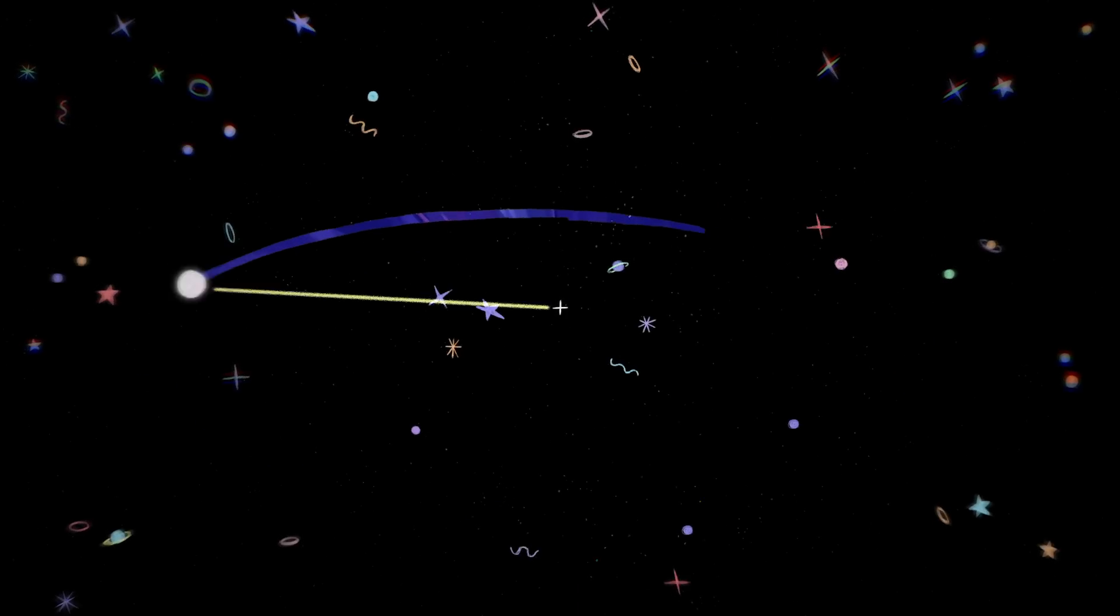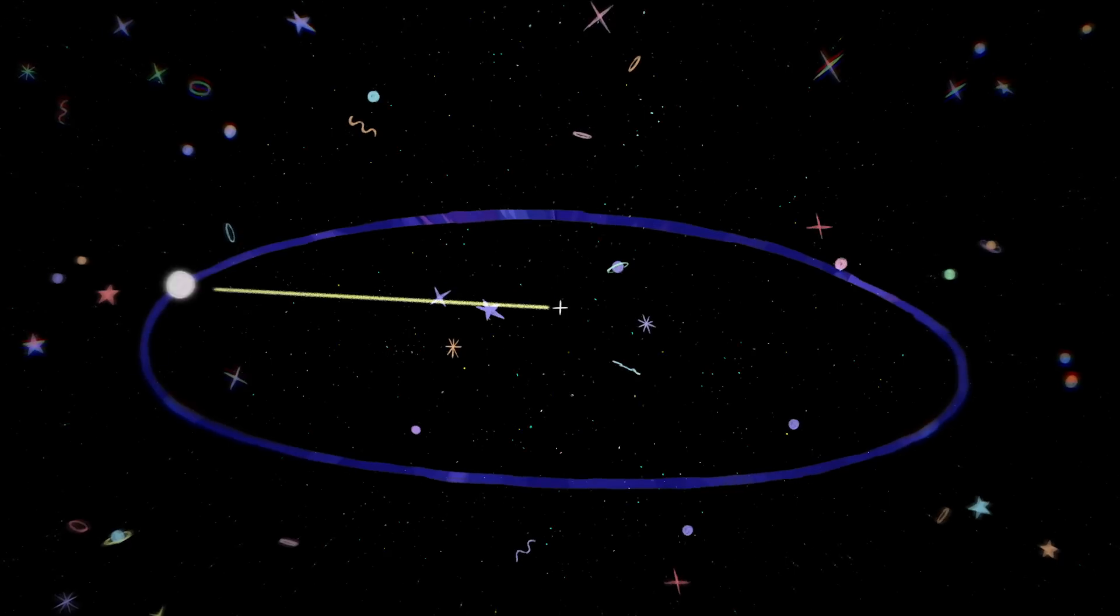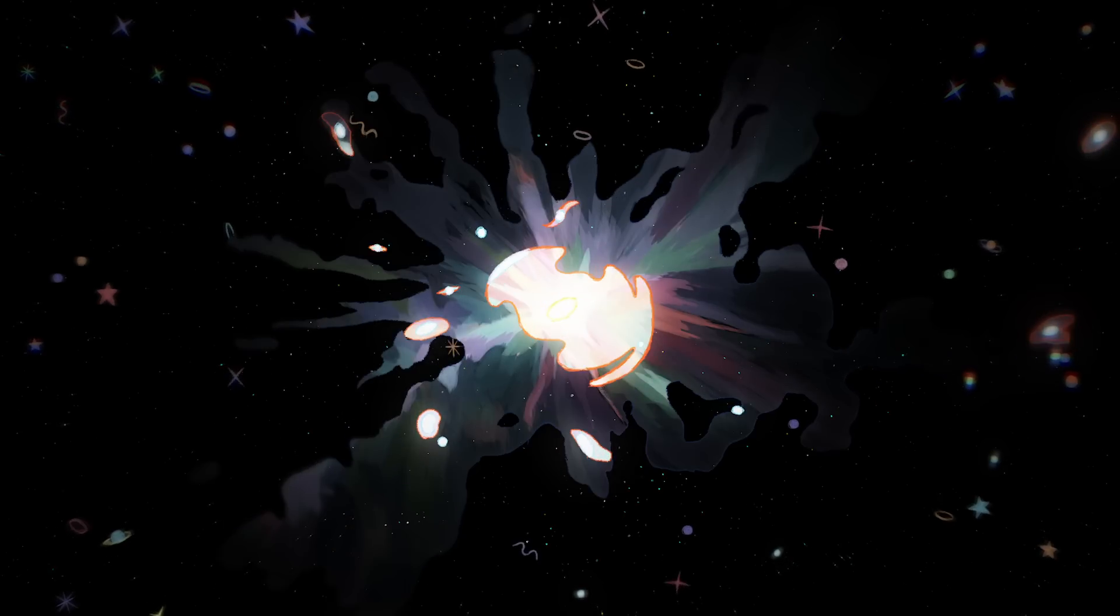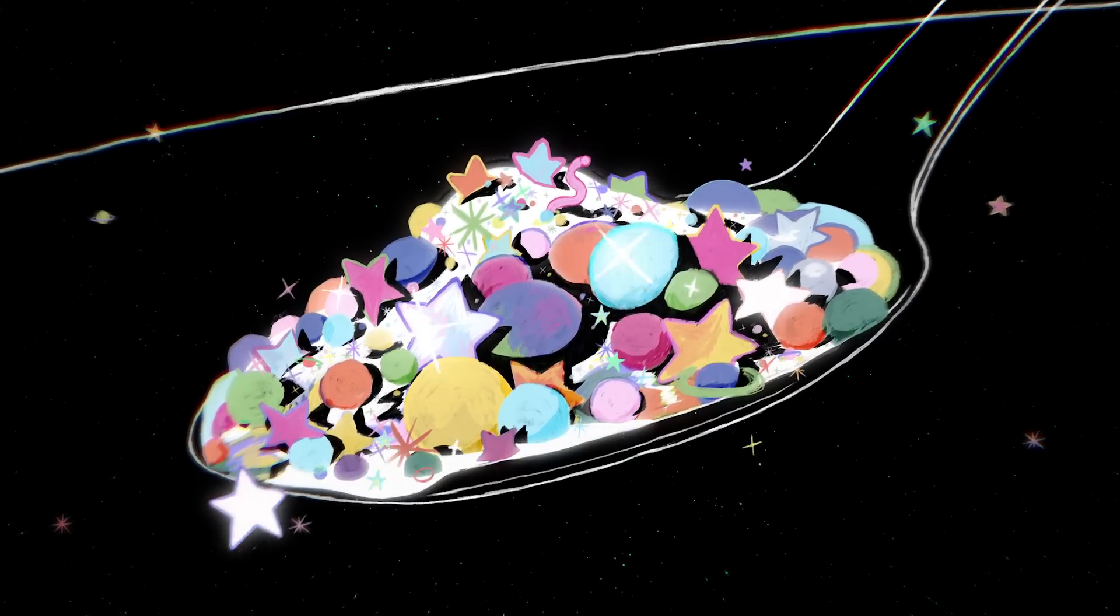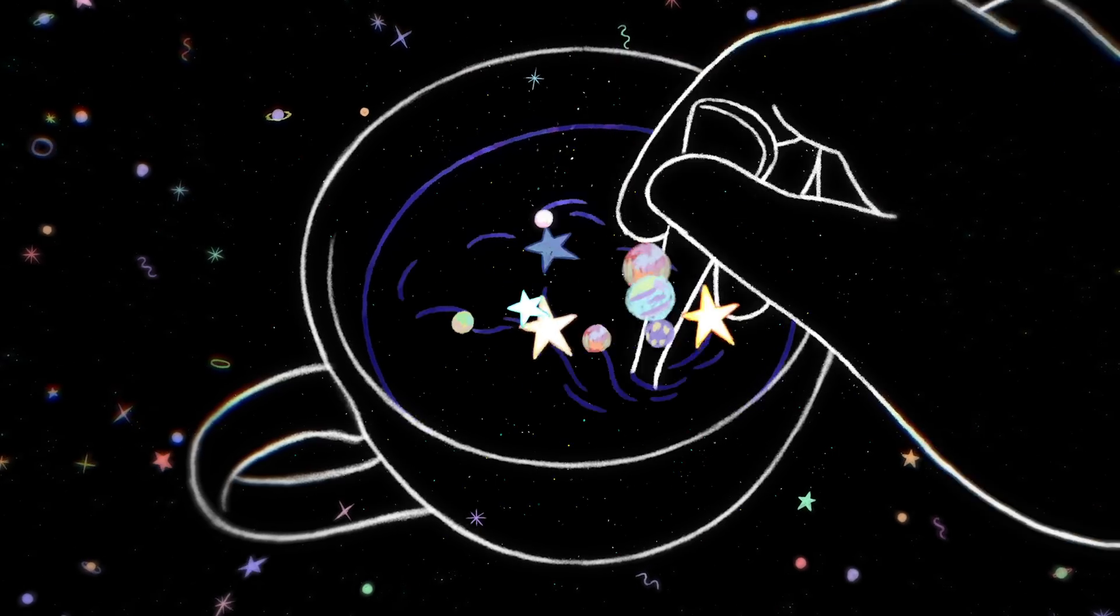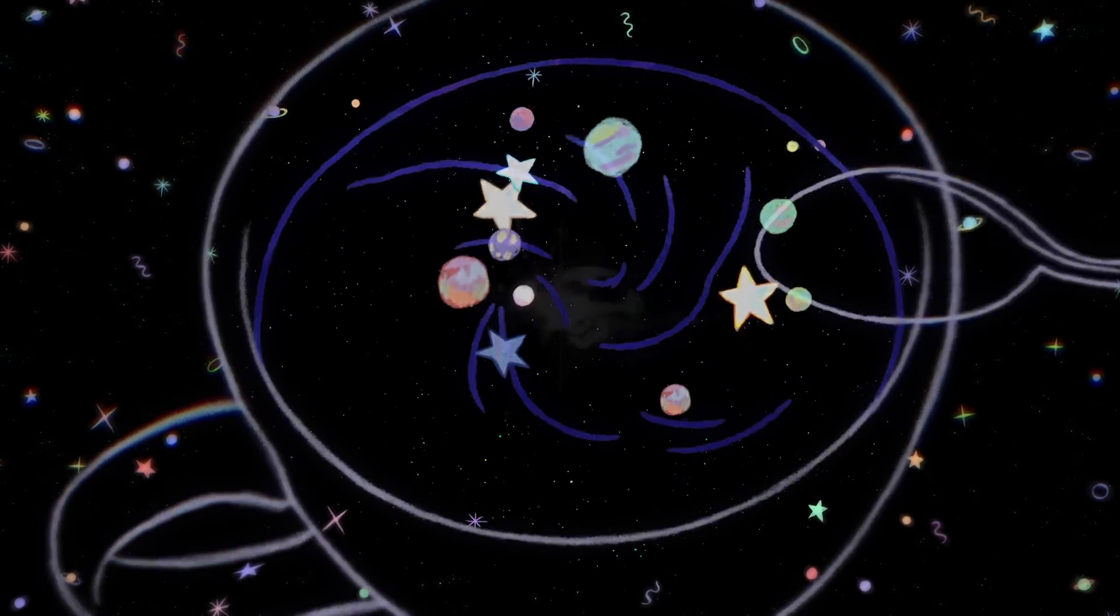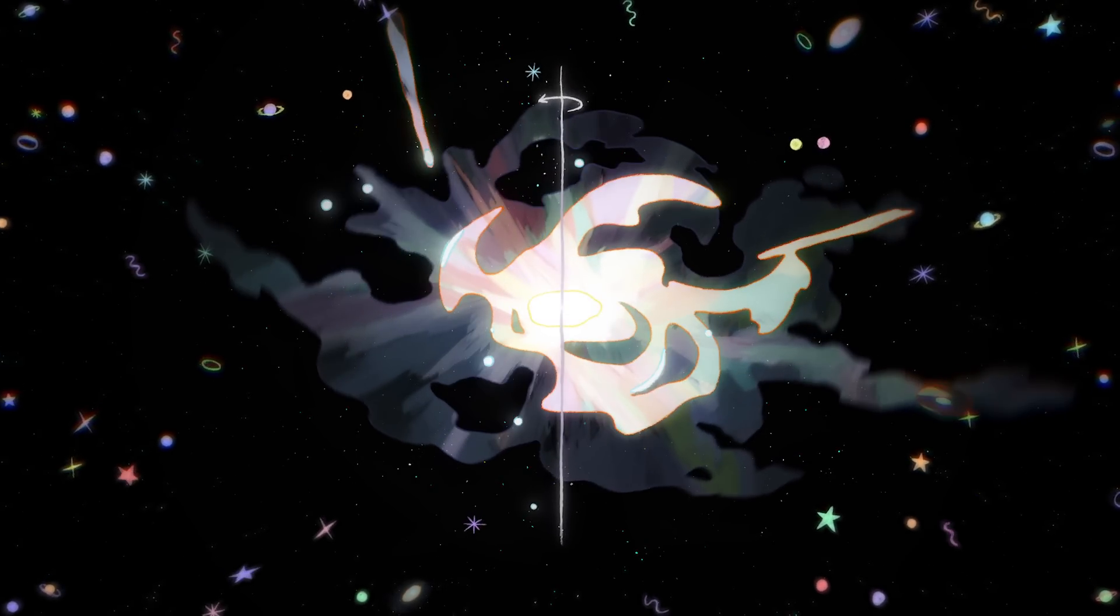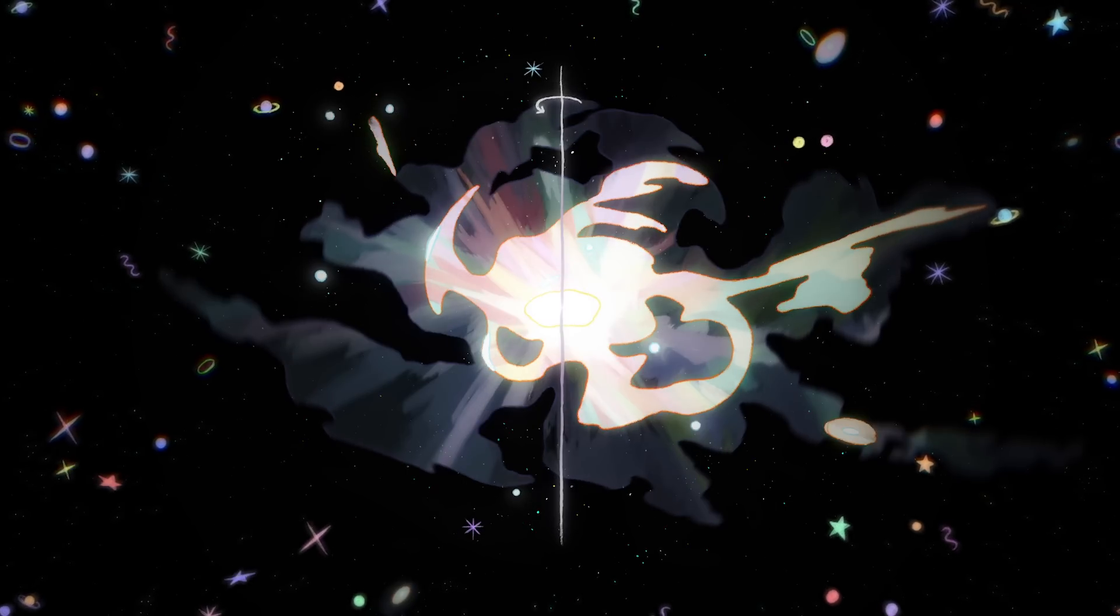Each particle had a certain angular momentum, the magnitude and direction of its rotation around the emerging galaxy's center. Just as the new galaxy's total mass was the sum of the individual particles' masses, the galaxy also had an angular momentum that was the sum of the particles' angular momenta. So, despite the wild motion of its parts, the galaxy as a whole was rotating about an axis.